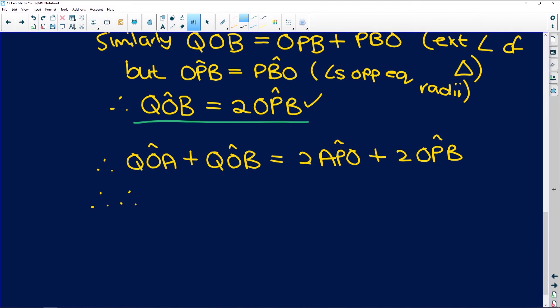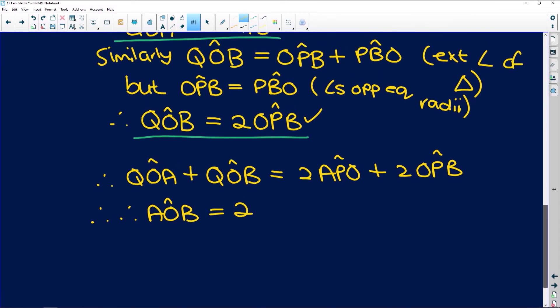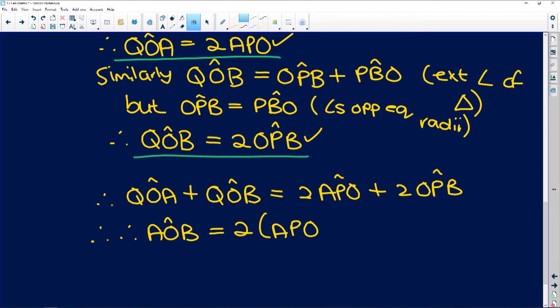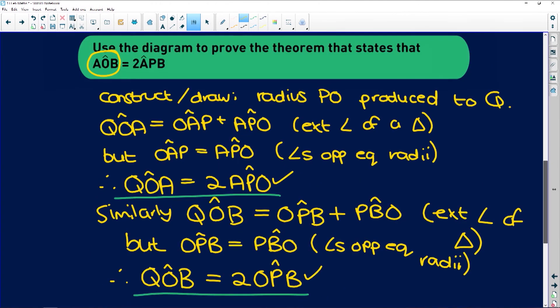Therefore, AOB is equal to 2 times APO plus OPB.